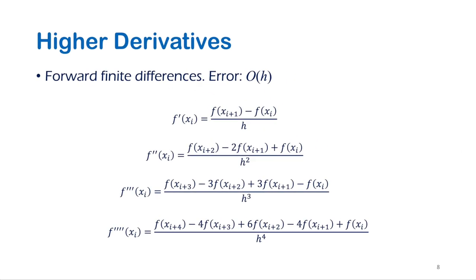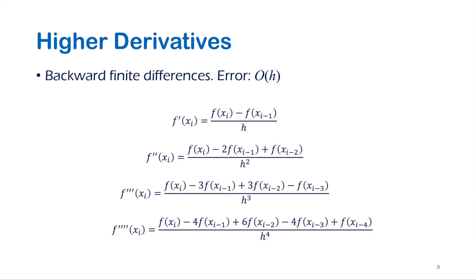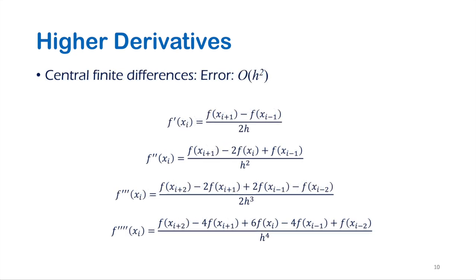The higher derivatives of forward, backward, and central finite differences require more points in the direction of the considered differences. Here we see the first, second, third, and fourth derivatives of the forward finite differences method. The number of the forward x points is equal to the order of the derivative. The same thing can be seen in the backward differences but in the opposite direction. In the central differences, the differences are mirrored about the center, so the order of the forward difference terms in each derivative is equal to the backward ones.